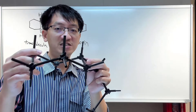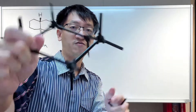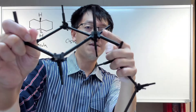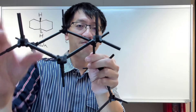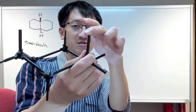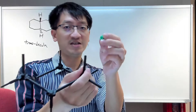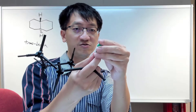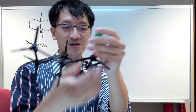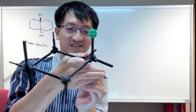How do we join them up to give transdecaline? It's pretty straightforward. All we need to do is choose two carbons here, and then keep two of the groups in the axial position — we let it be H. I'm going to use a green sphere to mark this part so that when I join the two structures up, it's clear that what you're getting is transdecaline.